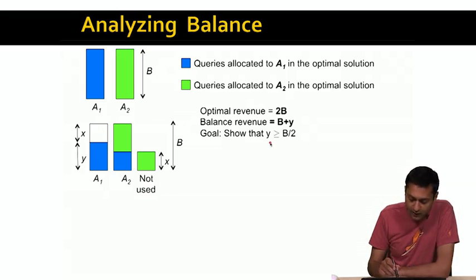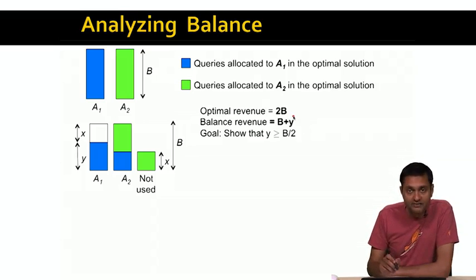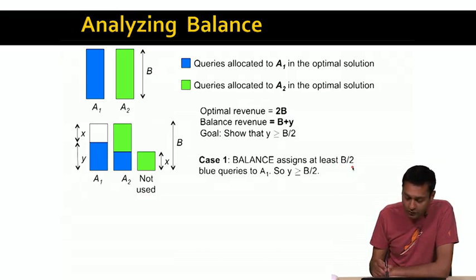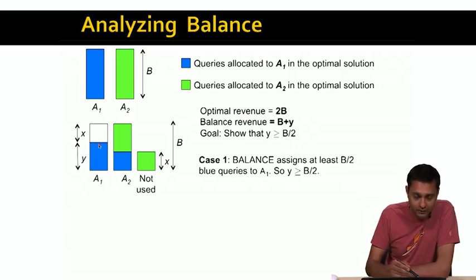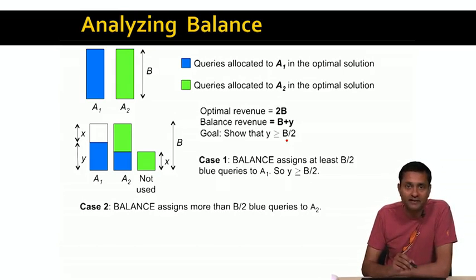So the optimal revenue is 2B, and the balance revenue is B plus Y. We want to show that Y is greater than or equal to B/2, because once we show that, we know the balance revenue is at least B + B/2 = 3B/2, which is three-fourths of the optimal. Consider two cases. Case one: the balance algorithm assigns at least B/2 of the blue queries to A1. Then the size of Y is at least B/2, and we've shown Y ≥ B/2 directly.